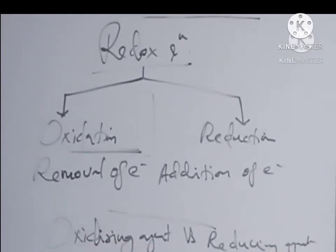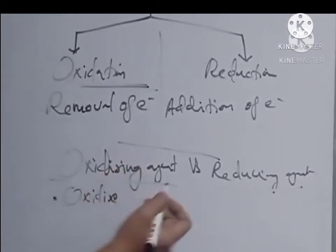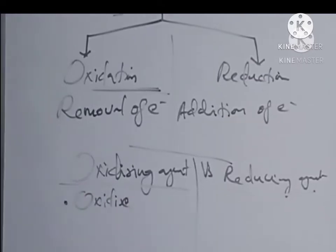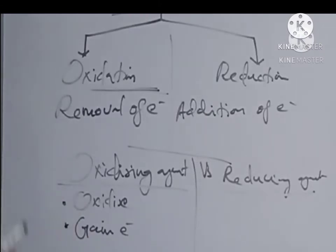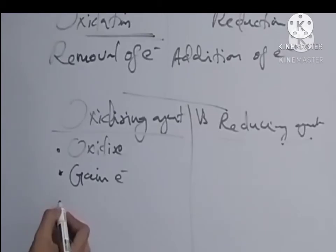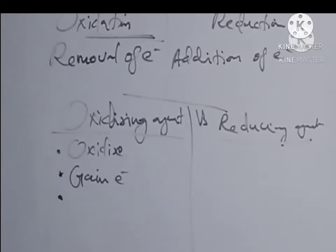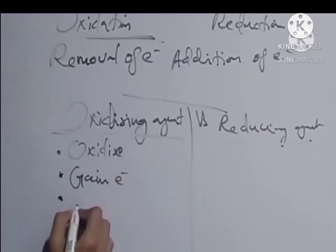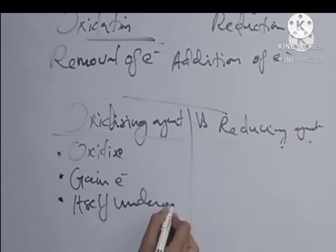What is meant by oxidizing agent and reducing agent? An oxidizing agent oxidizes another substance — that means it gains electrons. So oxidizing agents gain electrons from the substance which is undergoing oxidation, meaning the oxidizing agent itself undergoes reduction.